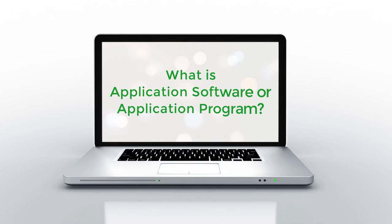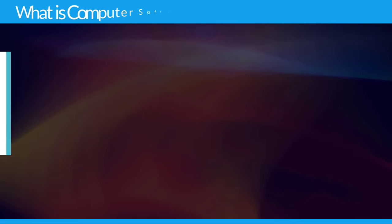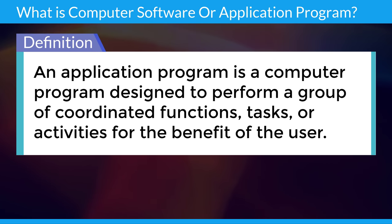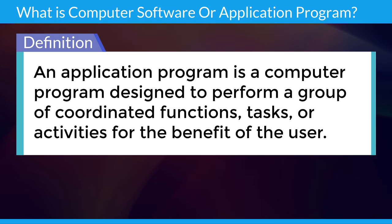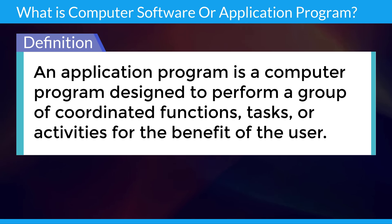What is Application Software or Application Program? An Application Program is a computer program designed to perform a group of coordinated functions, tasks, or activities for the benefit of the user.